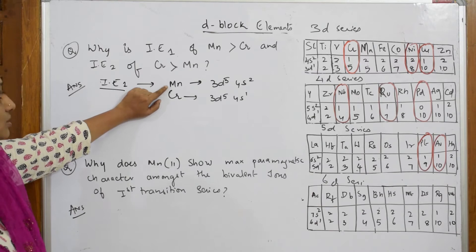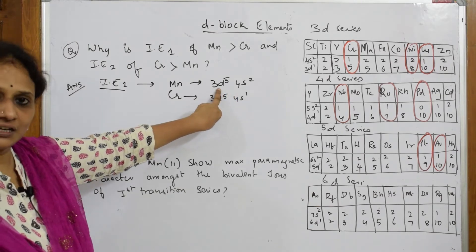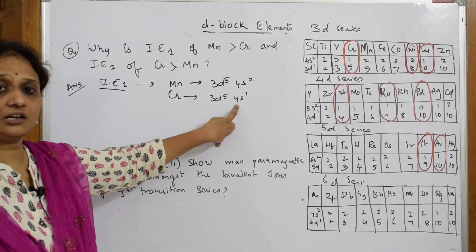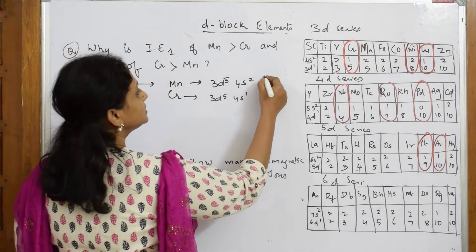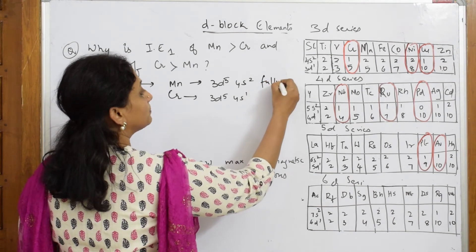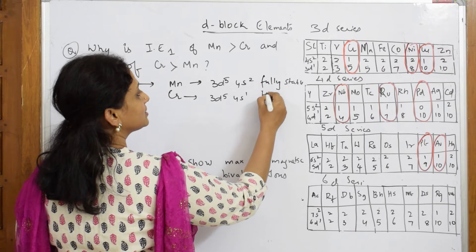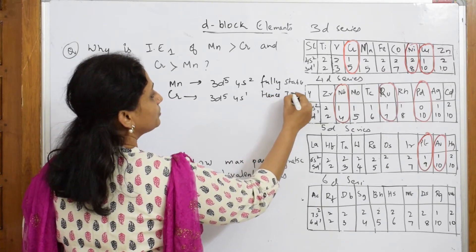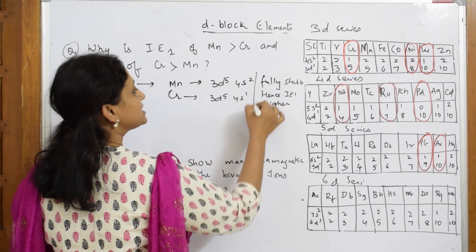Why is IE1 higher? When I compare this configuration, this is half-filled. Here also this is half-filled, but there is one unpaired electron here; this is paired. Which is more stable? This is fully or completely stable, and hence IE1 would be higher. Because when it is completely stable, it is very difficult for me to pull out that electron.